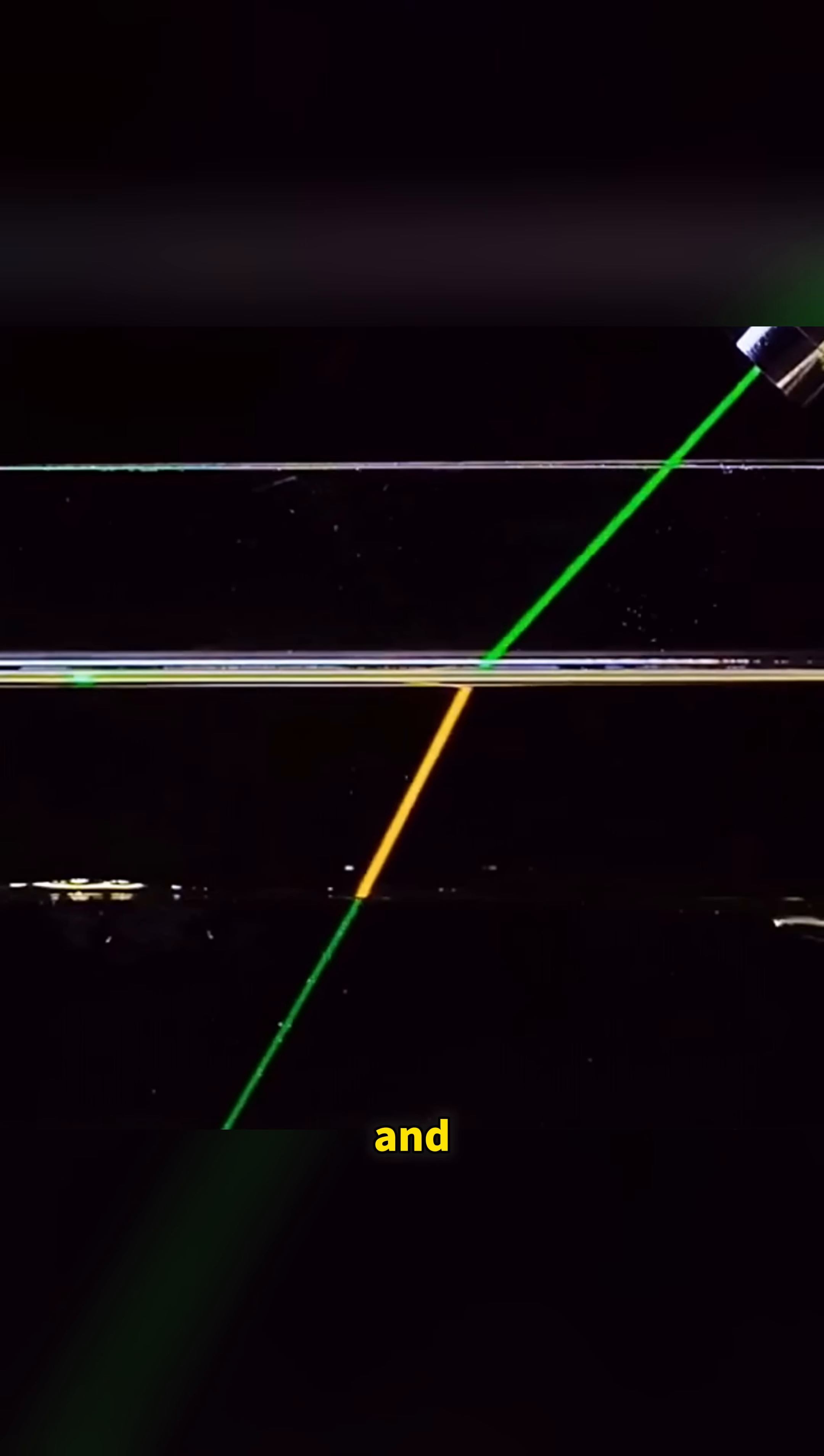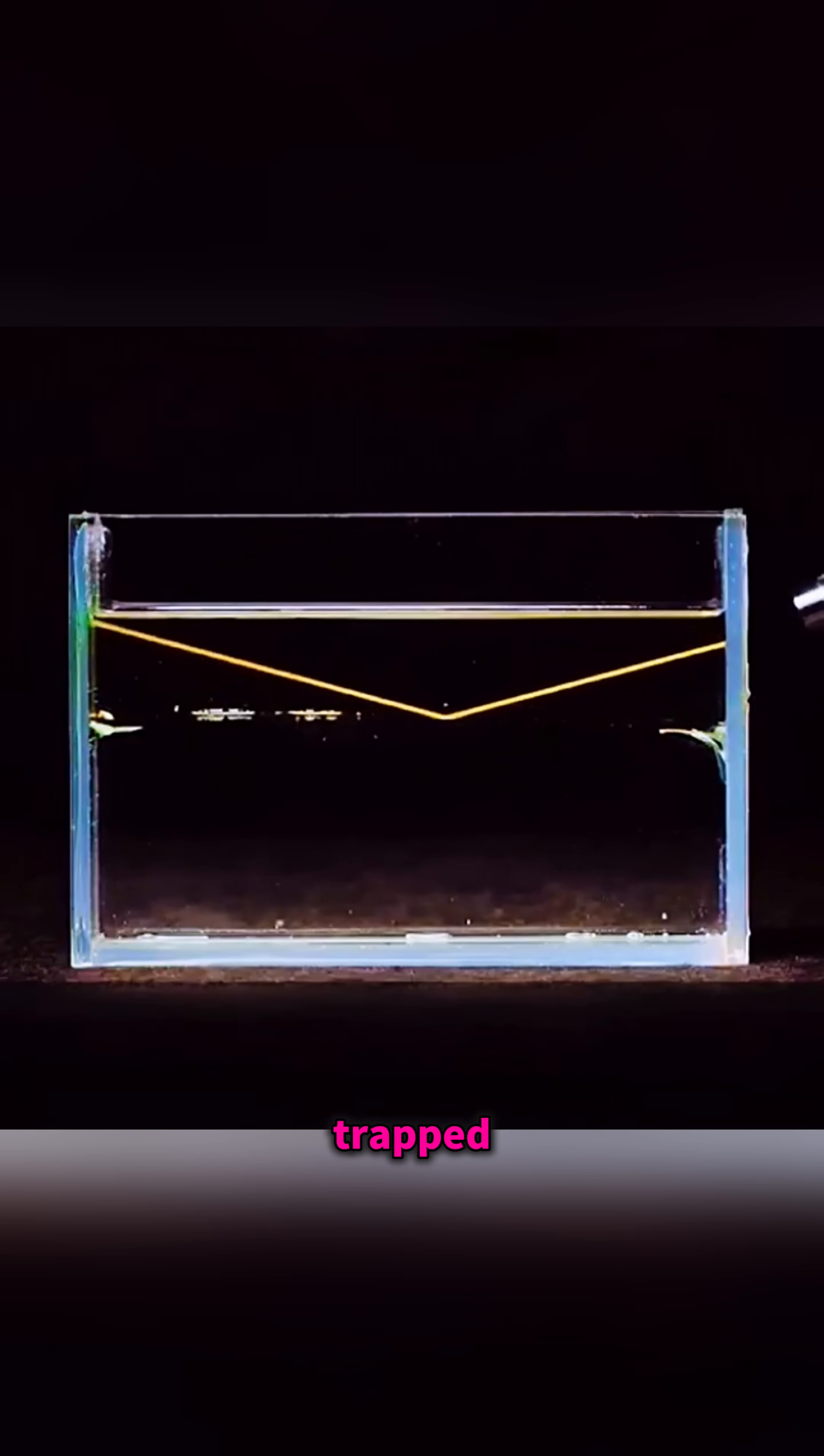Shine the light from the side of the oil and the light becomes completely trapped inside the oil layer, bouncing over and over again.